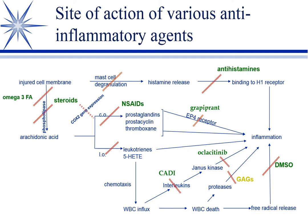Lipoxygenase can convert arachidonic acid into the leukotrienes. A specific type of leukotriene is 5-HETE, which is involved in some allergic reactions. These can be directly pro-inflammatory, but one of the things they do is they're chemotactic — the leukotrienes are part of what pull white cells into the injured area. That white cell influx is there to clean things up, but sometimes we get too many white cells.